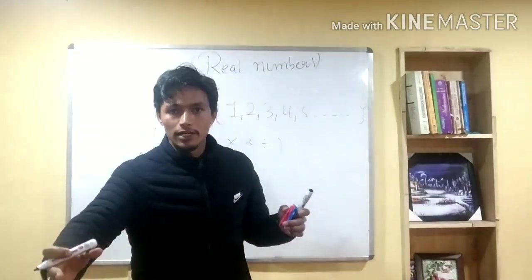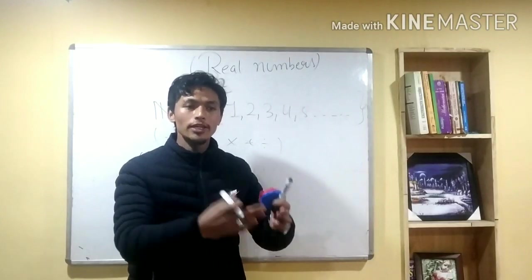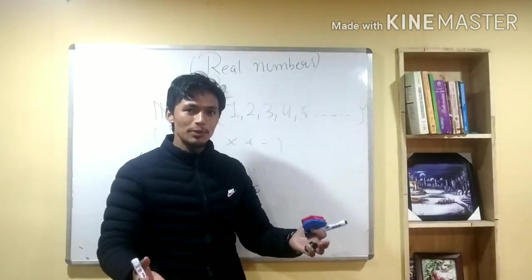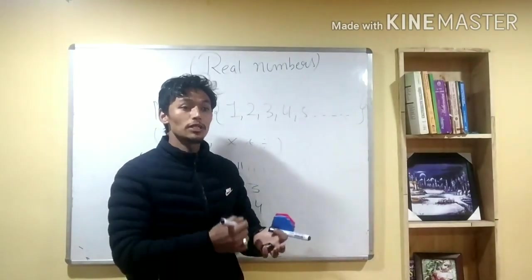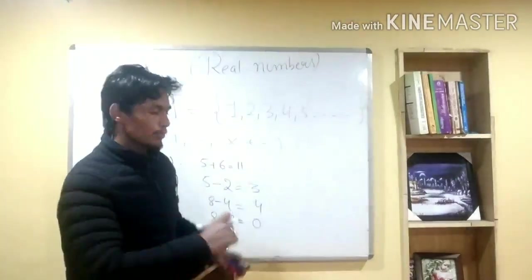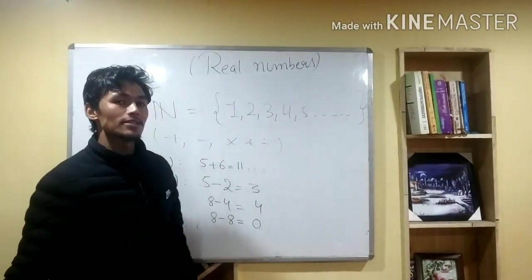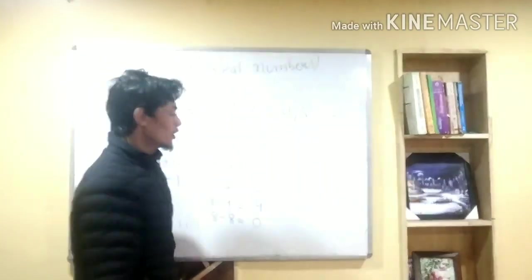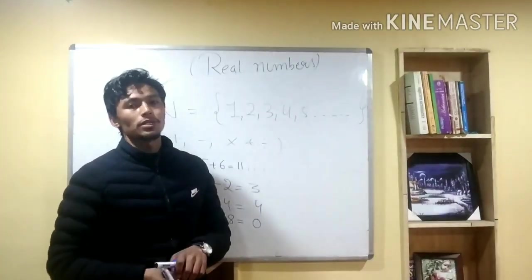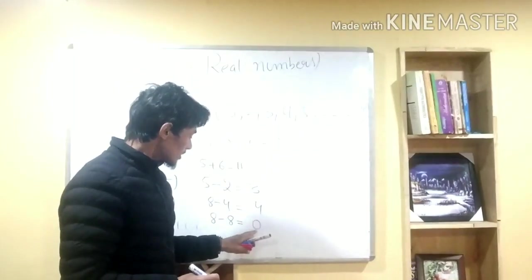So we call it 0. That means the numbers go 0, 1, 2, 3, 4. But the number 0 doesn't exist in the natural number system. So because there are problems, we have to create a system which is the whole number.